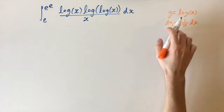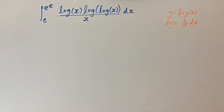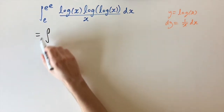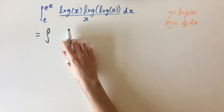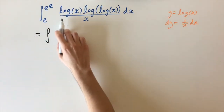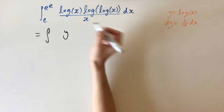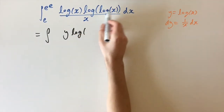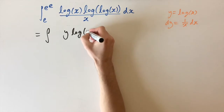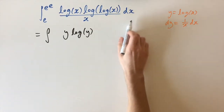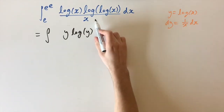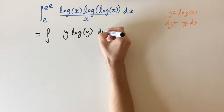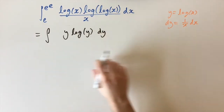All the log x's we just replace by y. So this is going to simplify as the integral — we need to change our limits, but we'll do that in a second. Replace log x by y, we have y times the logarithm of y, so y log y. And dx over x we replace by dy. Already this looks a lot nicer.